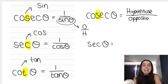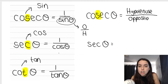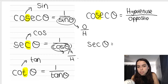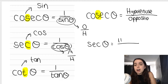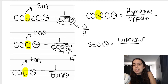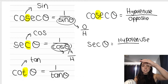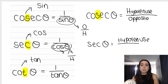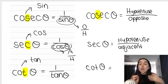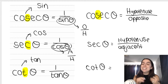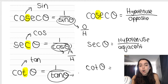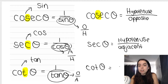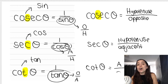Sec - remember we look at the third letter. The third letter of sec is C, which tells me that it's the reciprocal of cos. Cos is adjacent over hypotenuse, so sec is hypotenuse over adjacent - you just flip it around. So instead of adjacent over hypotenuse, it's hypotenuse over adjacent. Cot is the reciprocal of tan. Tan is opposite over adjacent, so cot is adjacent over opposite.